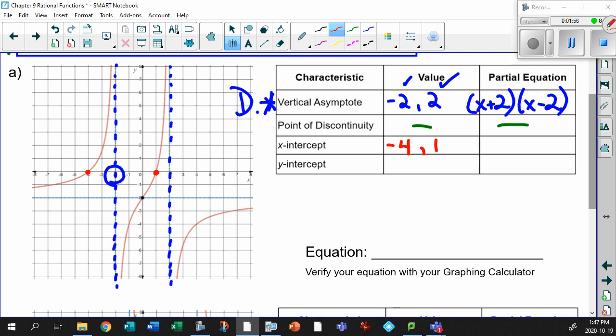Do you remember what those are all about? Yeah. Those go in your numerator. So think of what the equation is for this. That would be x plus 4 and x minus 1. Those go in your numerator.